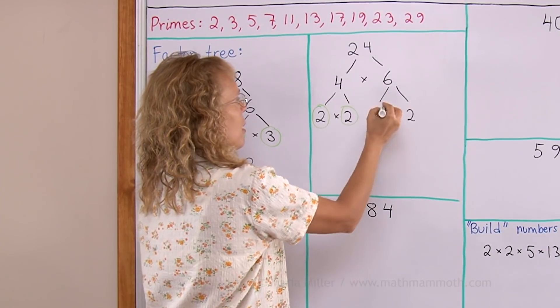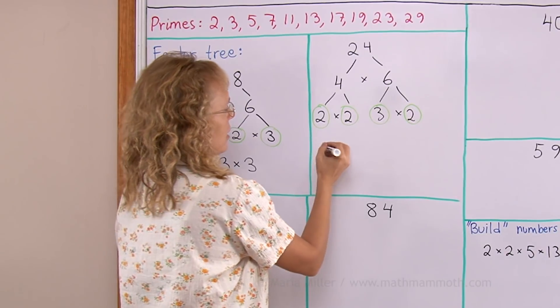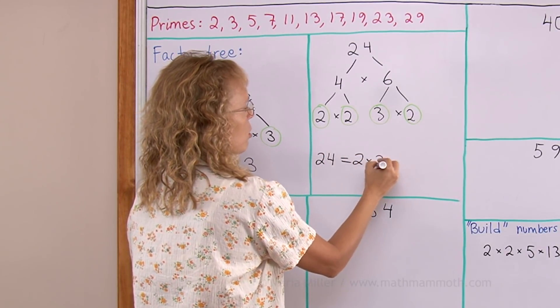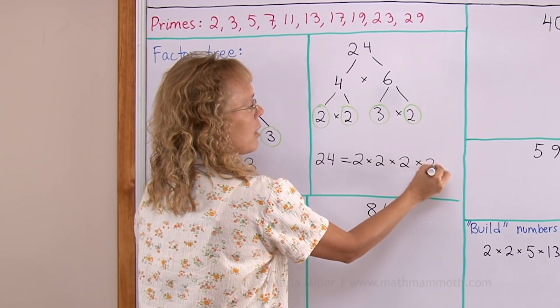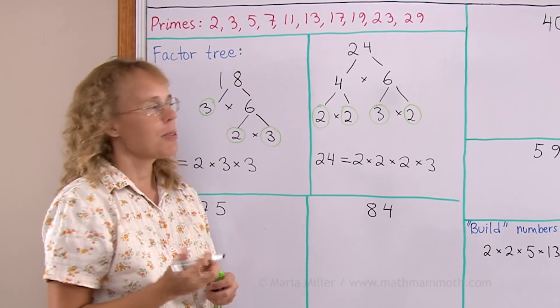I pick my leaves and I get the prime factorization of 24, which is 2 times 2 times 2 times 3. Here I want to write them in order, from the smallest to larger primes.